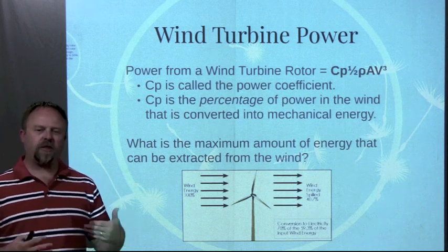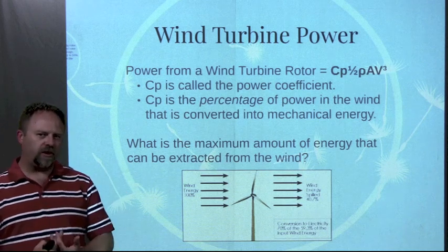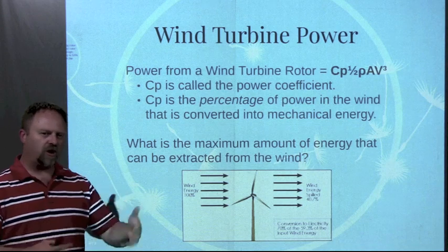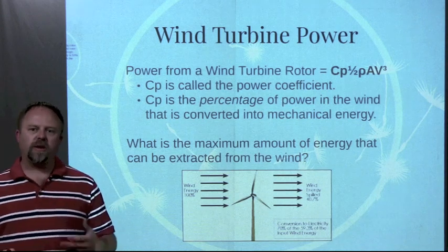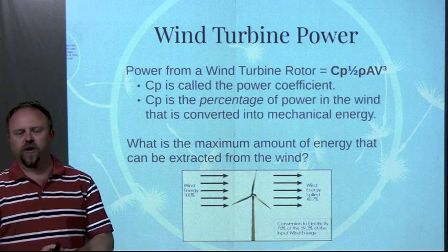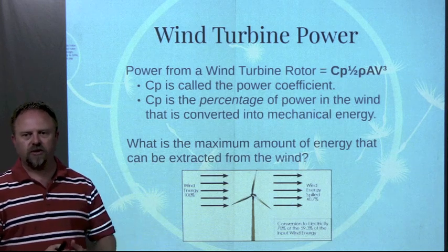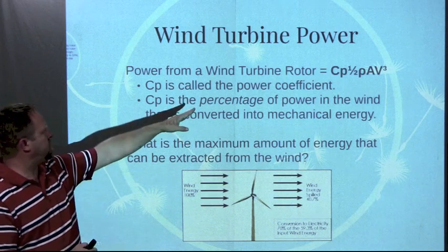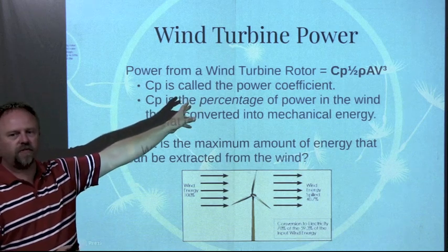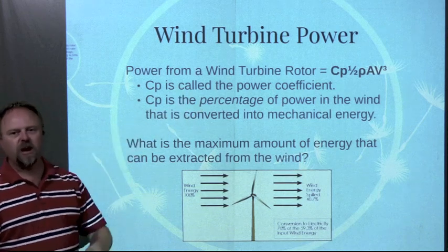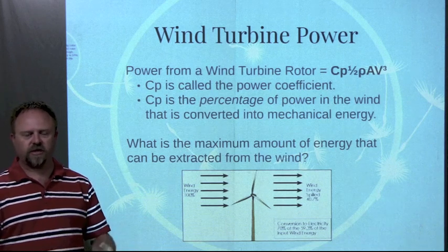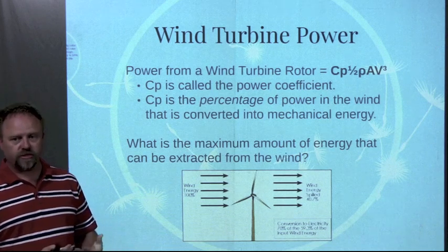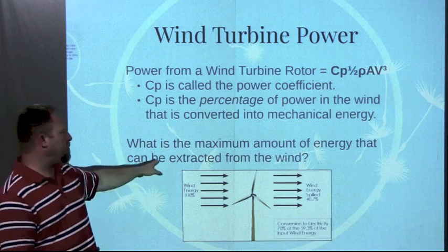When we think about the power that we can actually capture with the wind turbine, we're not going to be able to capture all the energy from the wind. So there's an efficiency, or what we call a power coefficient, that we're going to be able to apply to our formula. We're going to throw that c sub p, or Cp value there, that's our power coefficient, multiply that by the air. It's kind of a percentage of how much power we're actually going to convert into energy that we can use.